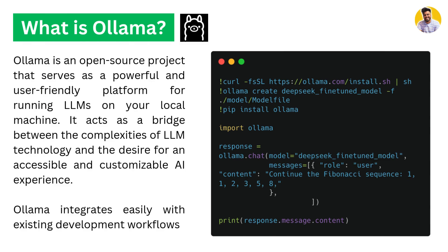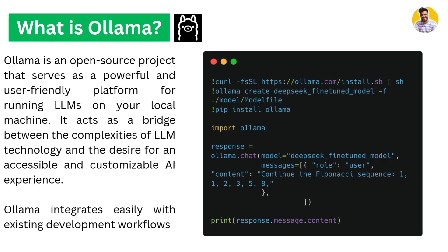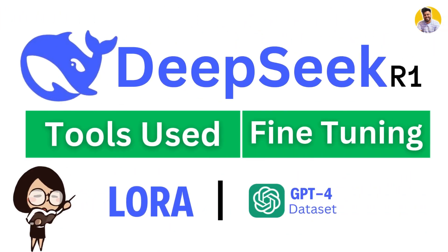Then we have Ollama. Ollama is an open-source tool that serves as a powerful, user-friendly platform to run large language models locally on your system. It acts as a bridge between the complexity and size of large language models and your local system requirements.